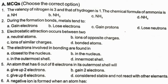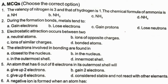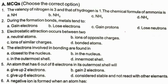Electrostatic attractions occur between two ions of opposite charges. The electrons involved in bonding are found in option C. An atom that has 6 out of 8 electrons in its outermost shell will option B gain 2 electrons.